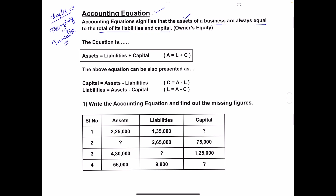Examples of assets include land, building, machine, cash, goods, etc. These are all examples of assets of a business. Capital is the amount invested by the owner. The amount an owner invests when starting a business is called capital.